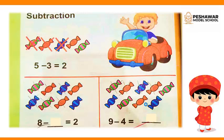Next, here we have 8 candies and the result is 2. Let's minus some candies to know the number: 1, 2, 3, 4, 5, 6. We can see here 2 candies are left. So 8 minus 6 is equal to 2.